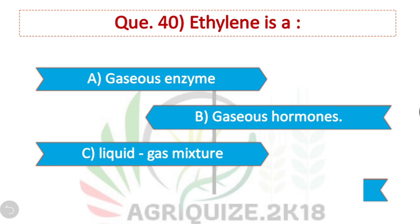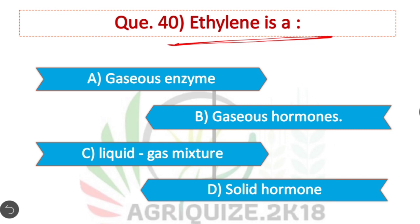Question 40: Ethylene — Option B is correct. Ethylene is a gaseous hormone used for hastening the ripening of fruits.